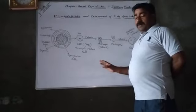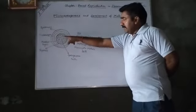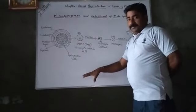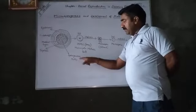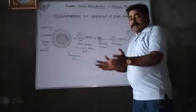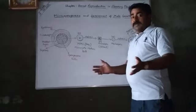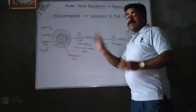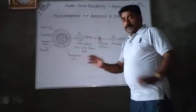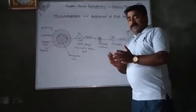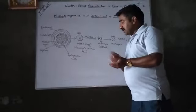Now it is the turn of sporogenous cells. The pollen sacs or microsporangia consist of meristematic cells known as sporogenous cells. Since they are in a group, they are also known as sporogenous tissue. Each cell of the sporogenous tissue —